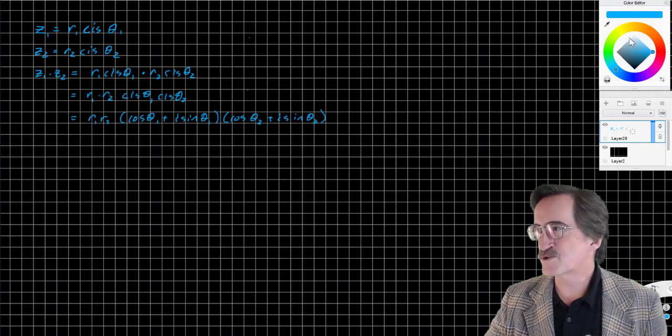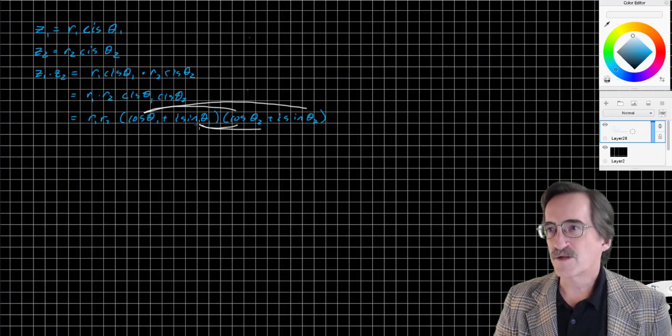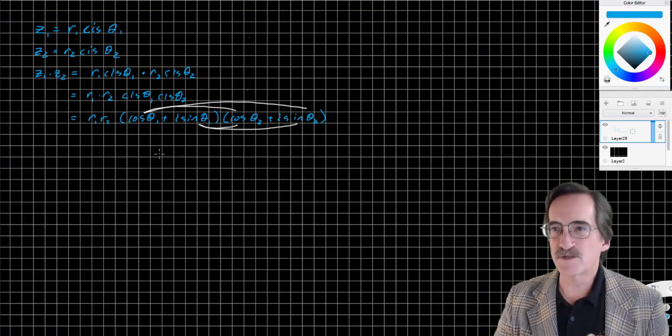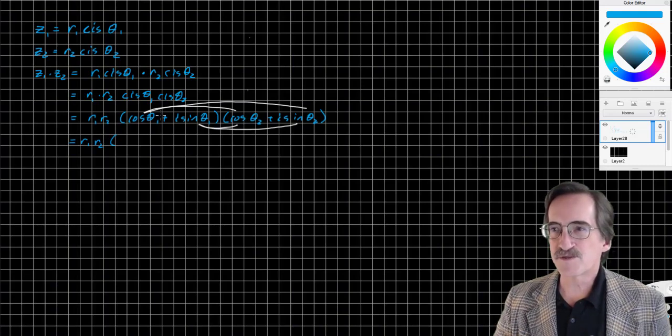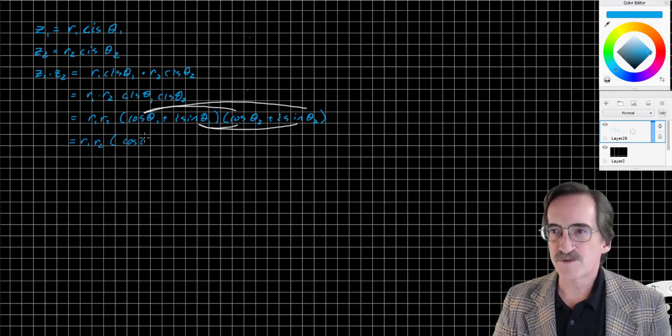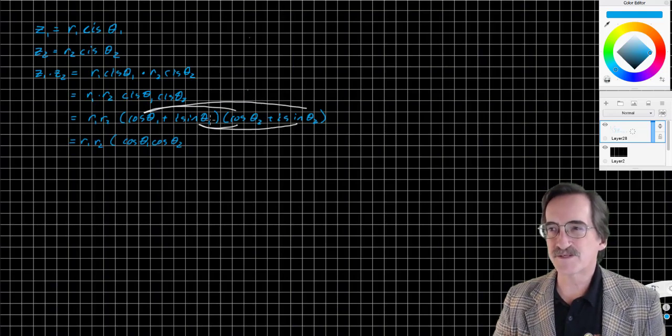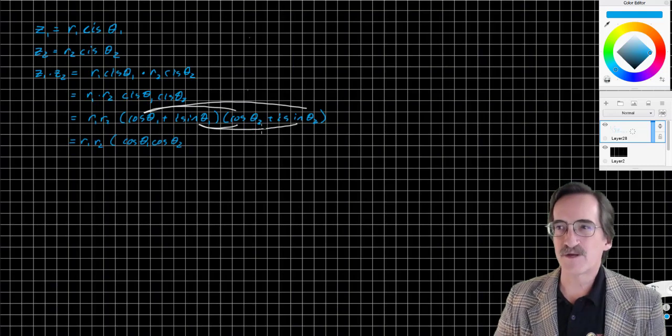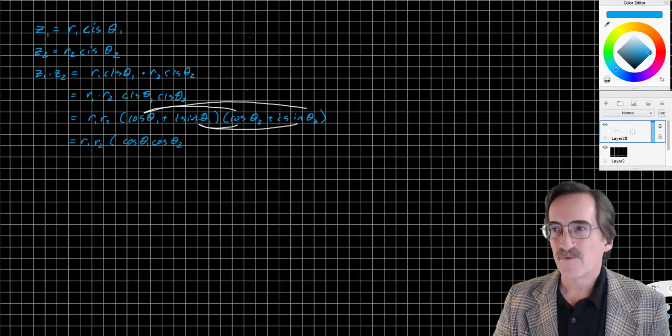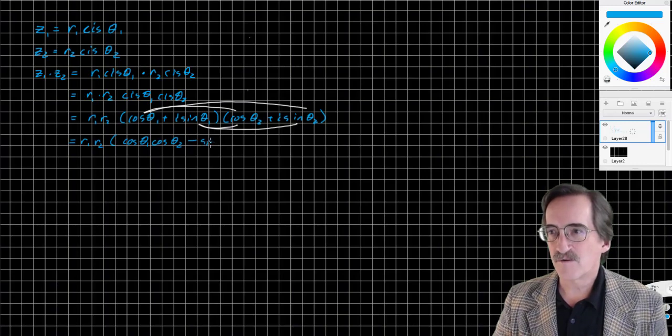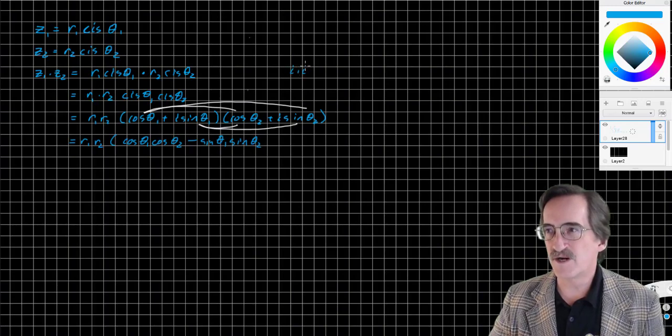Let's do a little distributing. You may remember FOIL or double distributing, making sure we multiply all pairs. I'm going to do the first and last first. So this is equal to R1 R2 cosine theta 1 times cosine theta 2. And then the last, i sine theta 1 times i sine theta 2. You may remember, i times i is negative 1. So this is negative sine theta 1 sine theta 2, because i squared is negative 1.